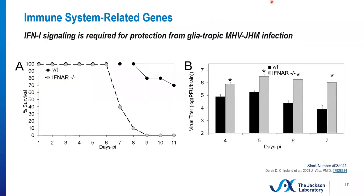Other coronaviruses, including severe acute respiratory syndrome CoV and mouse hepatitis virus, have recently been shown to avoid recognition by cytoplasmic pattern recognition receptors. This might be a mechanism they exploit to reduce type 1 interferon signaling. This study took a look at interferon-1 signaling using interferon alpha receptor knockout mice. You can see that the knockout mice were less protected — having worse survival compared to the wild-type mice, which are the solid black circles — and they also had a higher virus titer. This was a study done with the gliotropic mouse hepatitis virus.